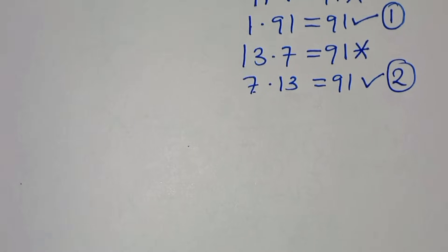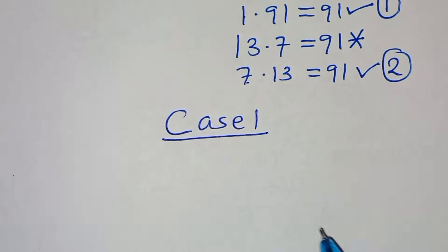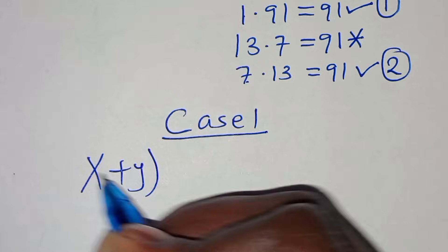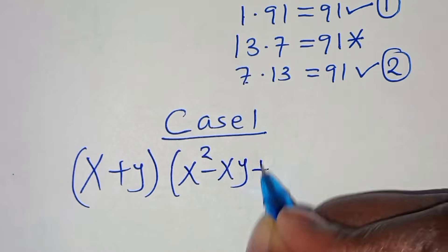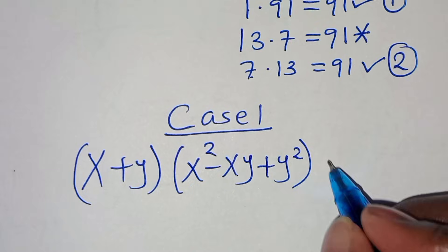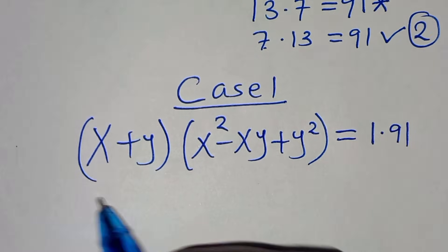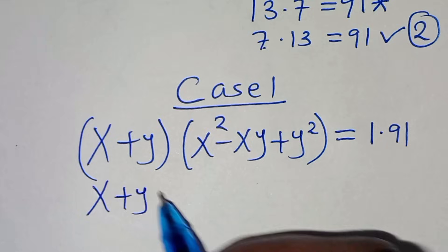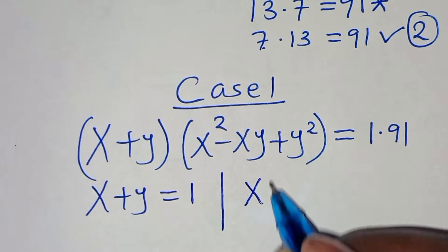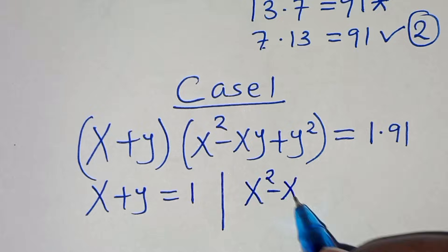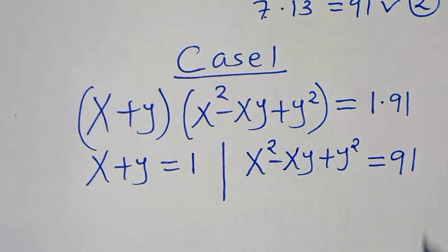In Case 1, we set (x + y)(x² − xy + y²) = 1 × 91, giving x + y = 1 and x² − xy + y² = 91.